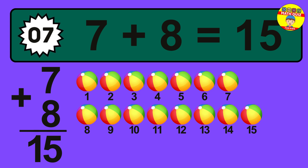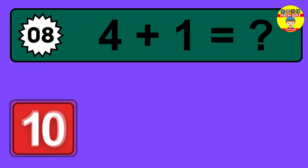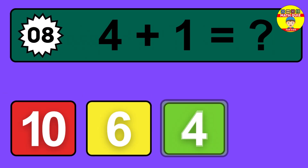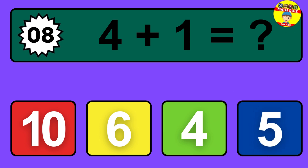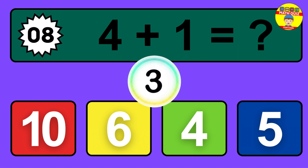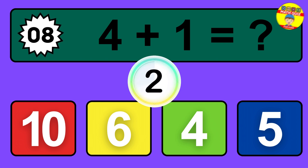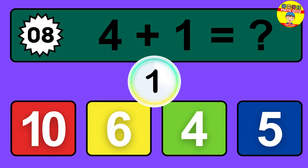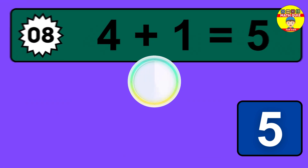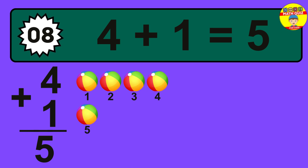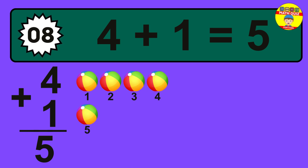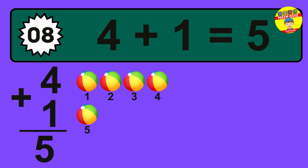9, 10, 11, 12, 13, 14, 15. Question 8. 4 plus 1 equals what? The answer is 4 plus 1 is 5. Let's count it: 1, 2, 3, 4, 5.